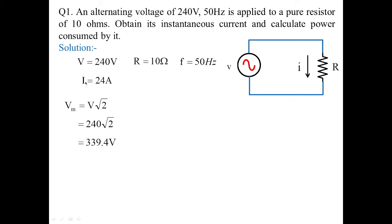Now let us estimate the maximum value of voltage. The RMS value is related to the maximum value by: V_rms = Vm / √2. Remember, when a voltage is mentioned as '240 volts, 50 Hz,' this indicates the RMS value. So maximum voltage Vm = V_rms × √2 = 240 × √2 = 339.4 volts. Similarly, the maximum current Im = I × √2 = 24 × √2 = 33.94 amperes.